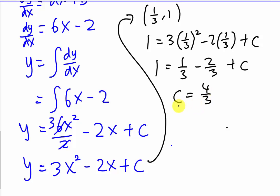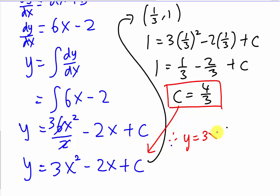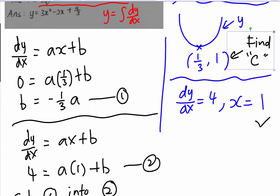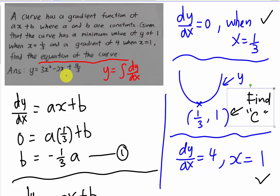Substituting c back into the equation, the final answer is y equals 3x squared minus 2x plus 4/3. This is how we find the equation of the curve. I hope this video gives you some guidance on finding the equation of the curve, solving for unknowns, and understanding the meaning of gradient function and minimum value. Thanks for watching.